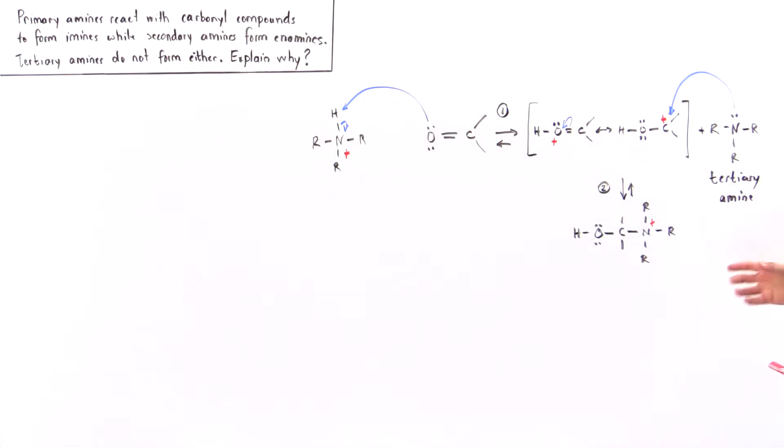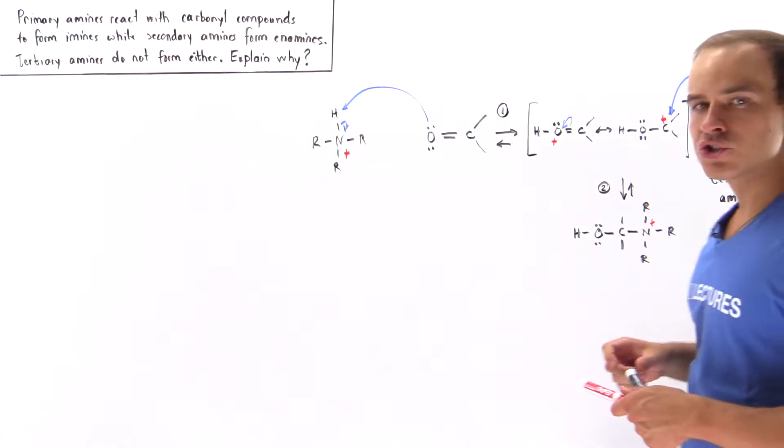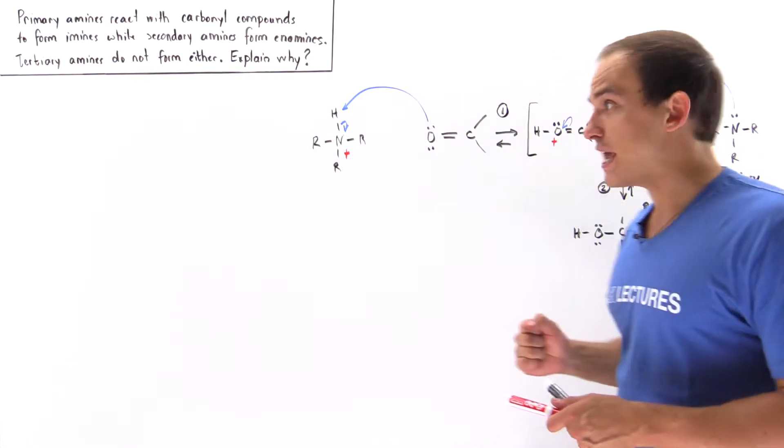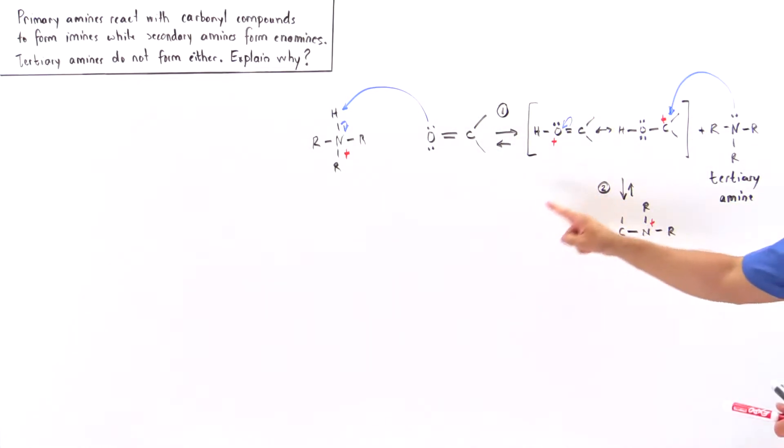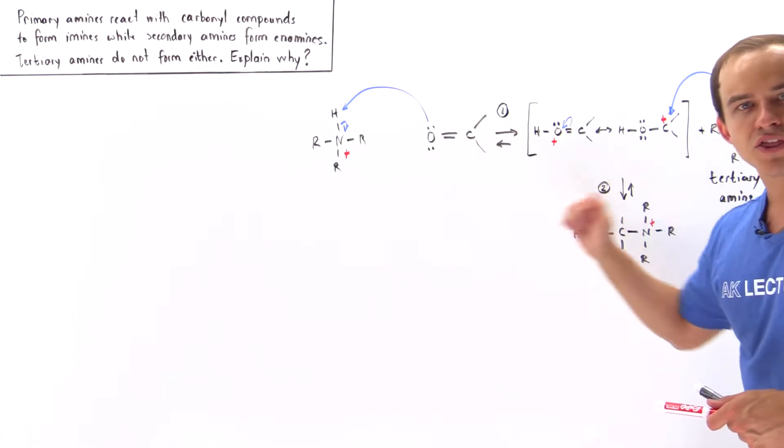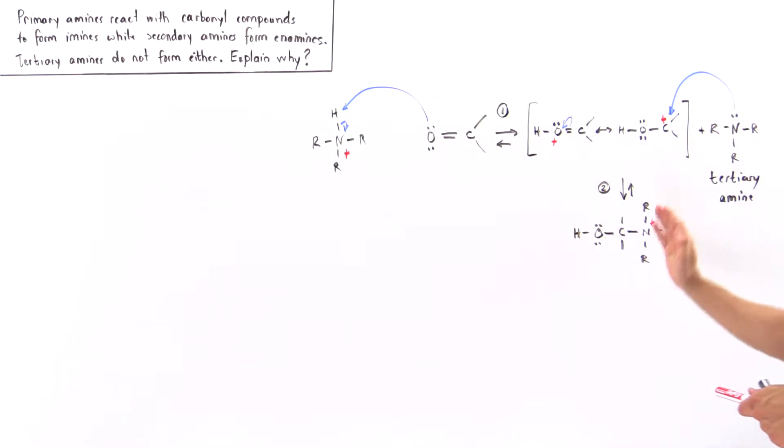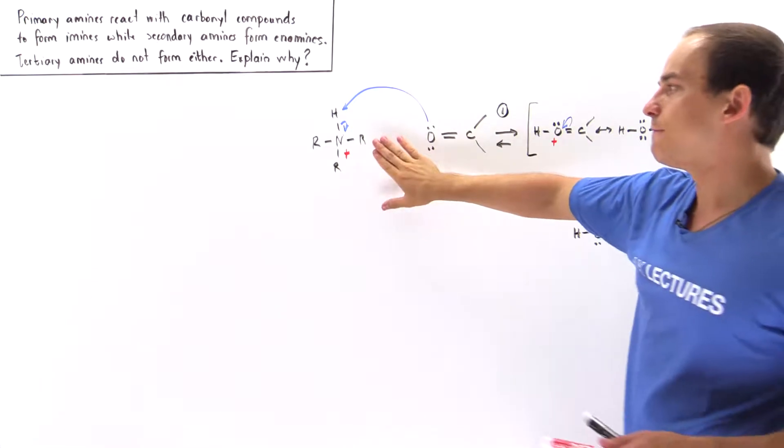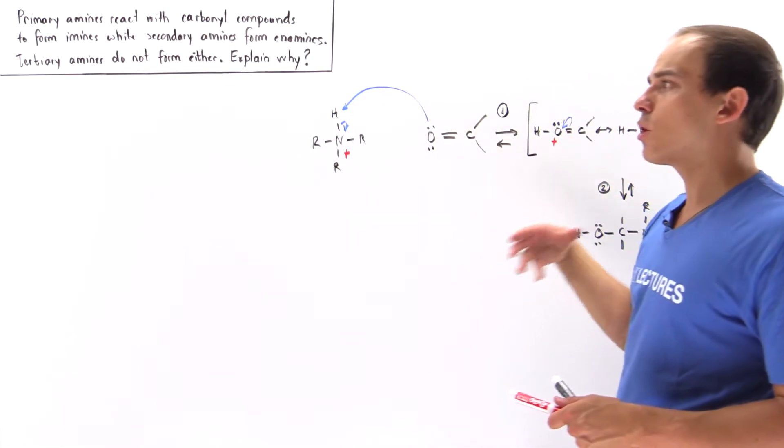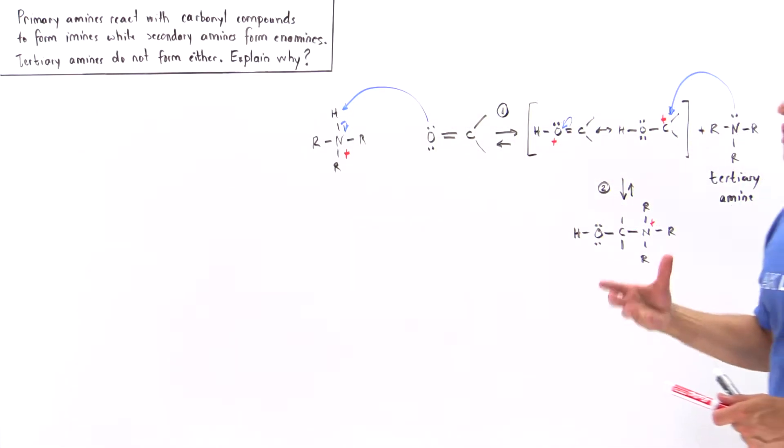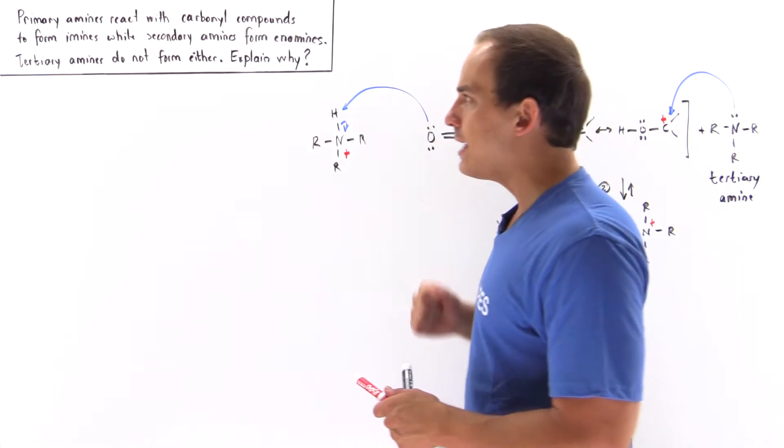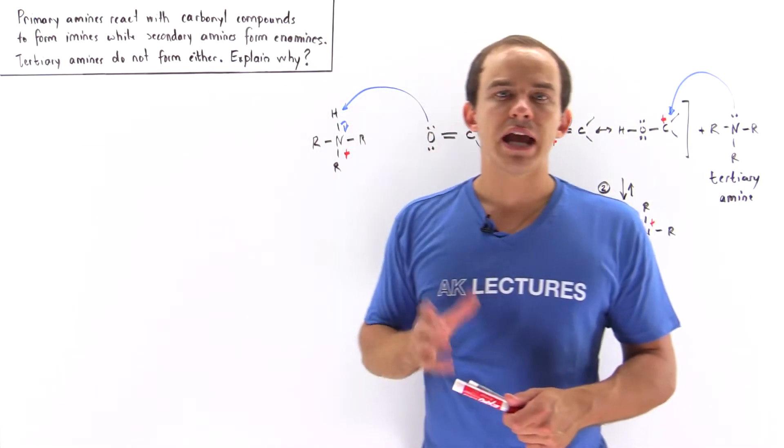A reaction does take place. So we do in fact form this relatively unstable intermediate, but because there is no other reaction pathway that can take place, we will go backwards and form this reactant. And so although a reaction does take place, we do not form the imine or the enamine using tertiary amines.